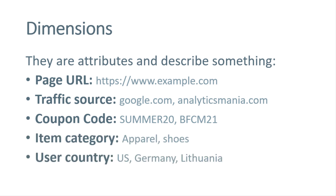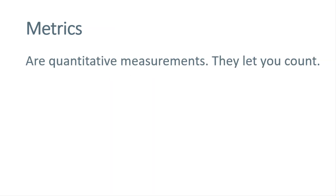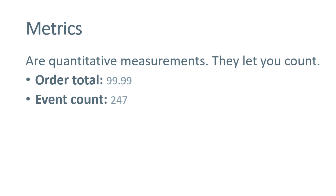As you can see, dimensions describe something and we can use them to create segments and audiences. For example, you can create a report where all the hits are only from sessions where the traffic source is google.com. As for metrics, they are quantitative measurements — they let you count things, or in other words, they are numbers. Although in some cases numbers can also be dimensions, but let's keep things simple. So here are several examples: total is a metric, event count is definitely a metric.